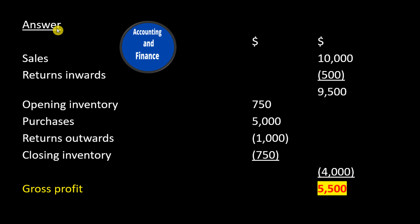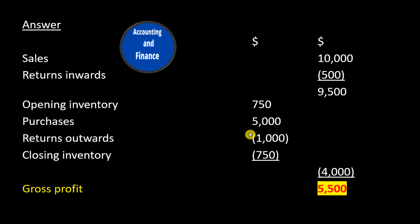Answer. Sales: $10,000. Returns inwards: minus $500, giving net sales of $9,500. Opening inventory: $750. Purchases: $5,000. Minus returns outwards: minus $1,000. Closing inventory: minus $750.